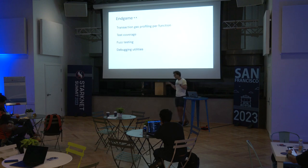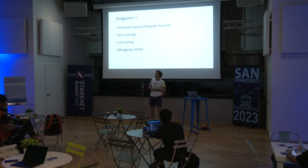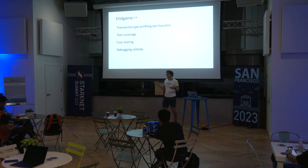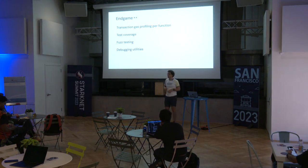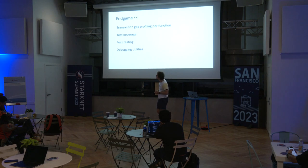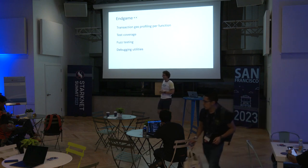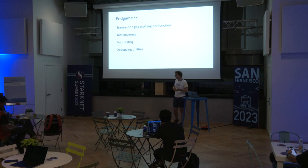Looking a bit further out — a few months from now — I believe we will be able to support transactions for gas profiling. If any of you used Protostar in the past, it supported very nice profiling of transactions, specifying how much gas each function used. We want to have a similar feature for Cairo 1 in Starknet Foundry. We also want to support test coverage, so you'll be able to analyze what code you've covered, along with fuzz testing and some additional debugging utilities.